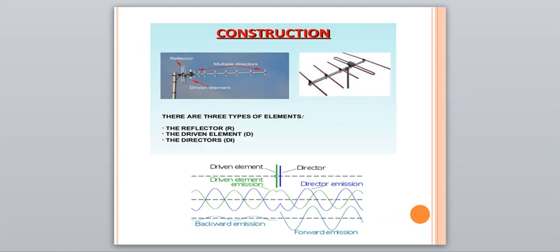So in structure, if you see the structure, there are mainly three types of elements used for a structure of antenna. Here it is a reflector, driven element and directors, multiple directors.